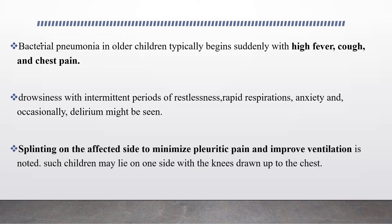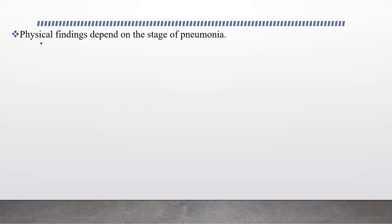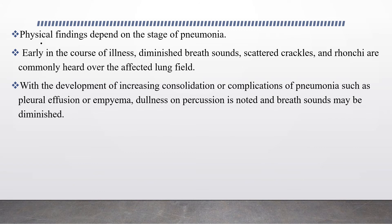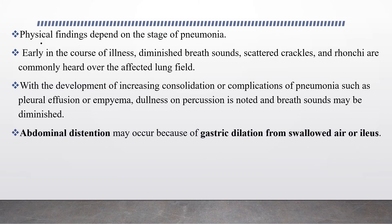Splinting on the affected side to minimize pleuritic pain and improve ventilation is noted, such that children might lie on one side with knees drawn up to the chest. Physical findings depend on the stage of pneumonia. Early in the course of illness, diminished breath sounds, scattered crackles, and rhonchi are commonly heard over the affected lung field. With increasing consolidation or complications such as pleural effusion or empyema, dullness on percussion is noted. Abdominal distension might occur due to gastric dilation from swallowed air or ileus.